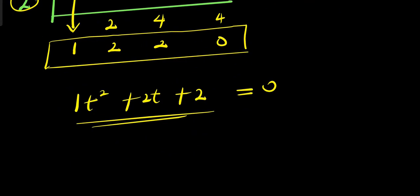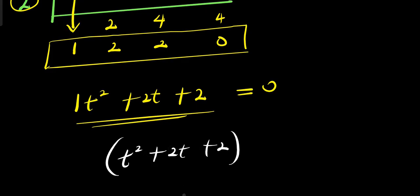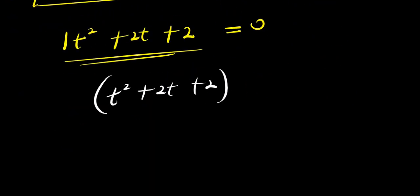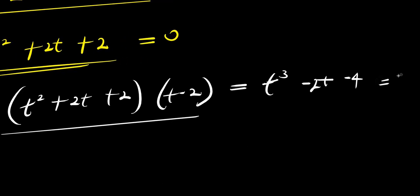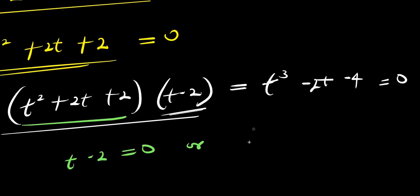So this means the expression factors as t squared plus 2t plus 2. If I multiply this by the first factor t minus 2, I get back the original expression t cubed minus 2t minus 4 equals 0. So setting each factor to zero: t minus 2 equals 0, or the quadratic t squared plus 2t plus 2 equals 0.